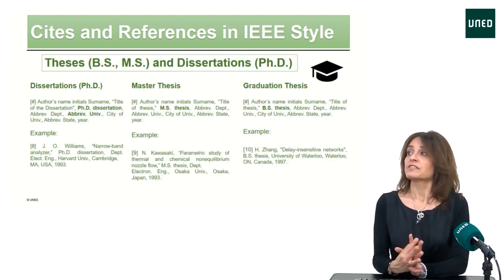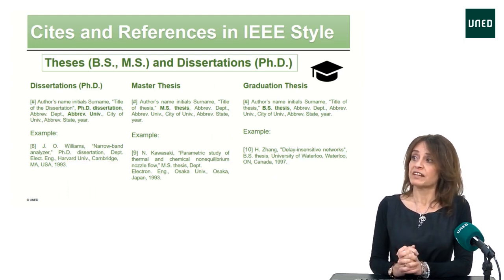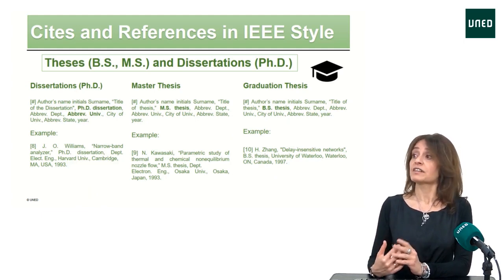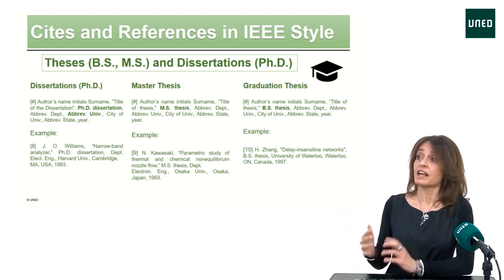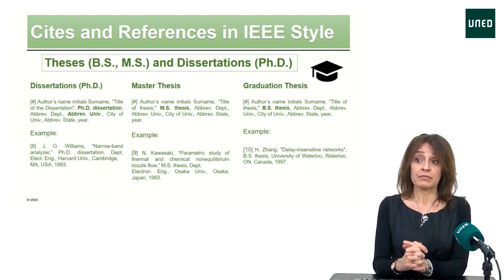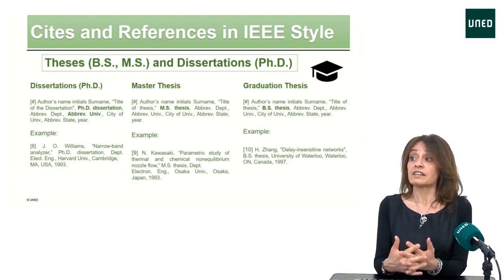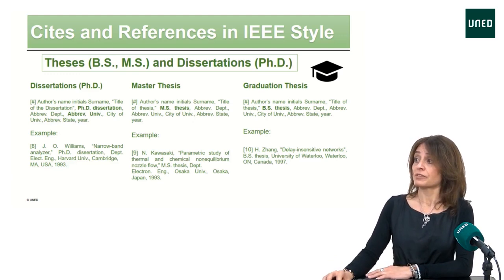For theses and dissertations, they are usually cited the same way, but the difference is that we have to specify which kind of work it is — whether it is a PhD dissertation, an MA or MMR thesis, or a BH thesis. Then we always include the department, the university abbreviated, the city and state of the university abbreviated as well, and the year of the work. There are three examples for you to compare them.